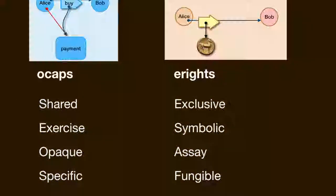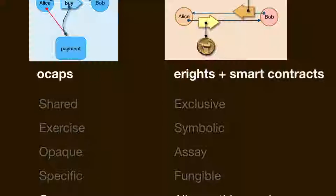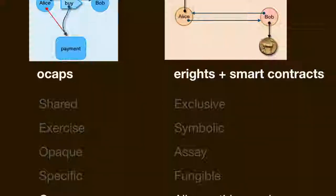There's another way in which objects differ from the world of smart contracts: the basic transaction in the object system is the message send, which is a one-way transfer of rights. Whereas for smart contracts, the core operation is an all-or-nothing exchange of rights — either both rights have been exchanged, or it's as if nothing happened.